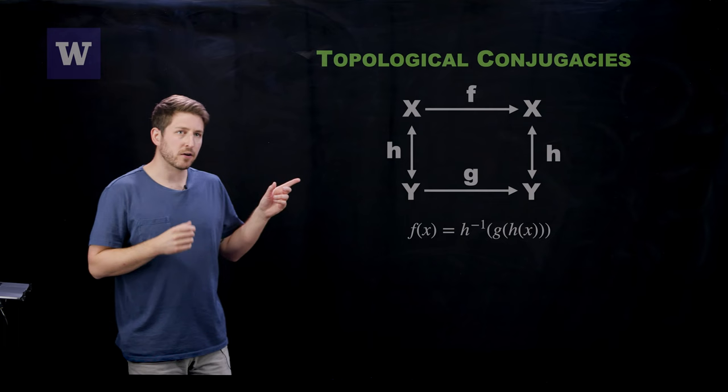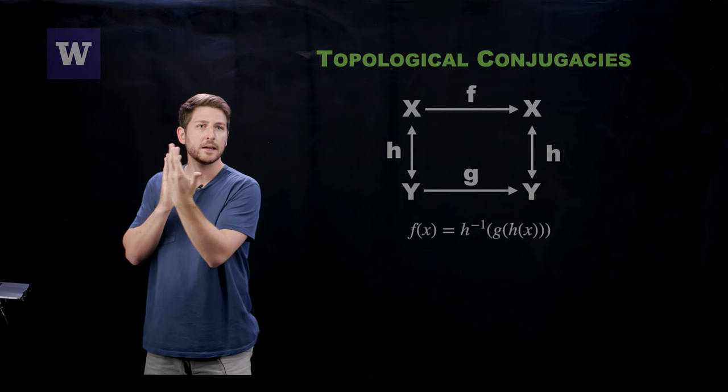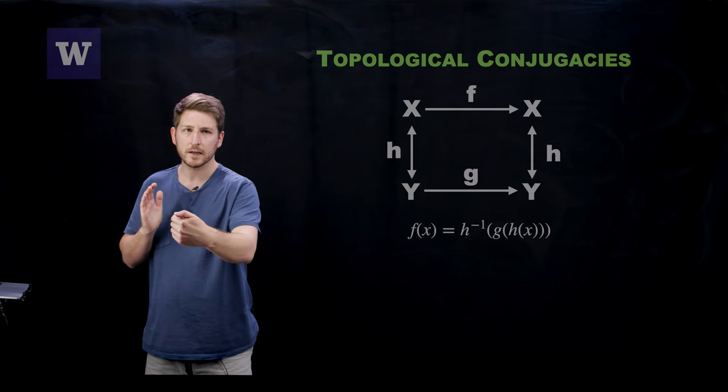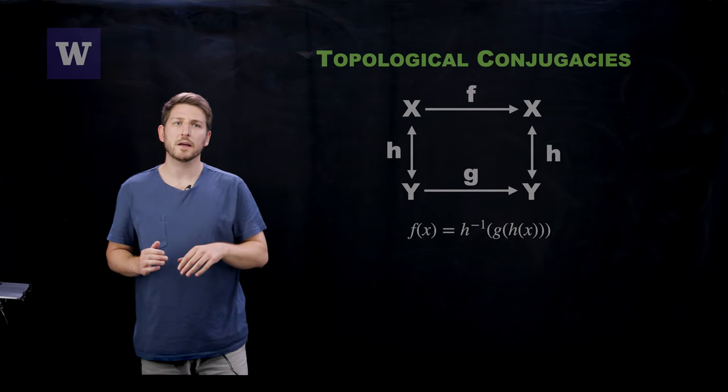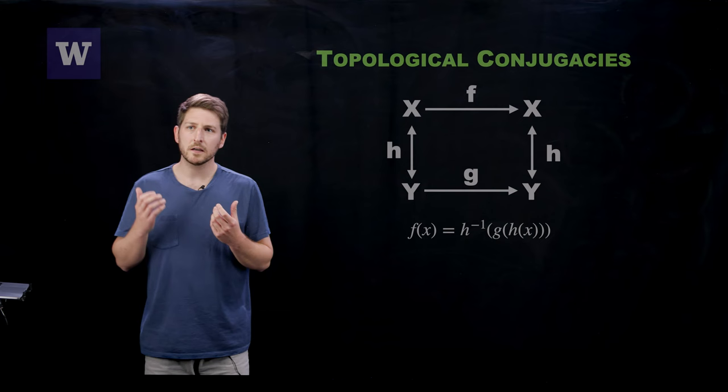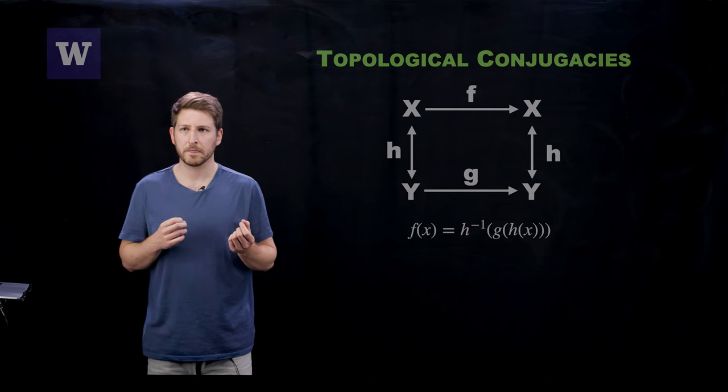And what this commutative diagram beside me really says is that if you would like to iterate yourself from x-space back into x-space using the mapping f, what you could do instead is change the variables down to y-space with the homeomorphism, iterate forward in y-space using the mapping g, and then come back to x-space by applying the inverse of that homeomorphism. And the advantage here is that this allows one to relate relatively complicated systems to potentially much simpler systems.